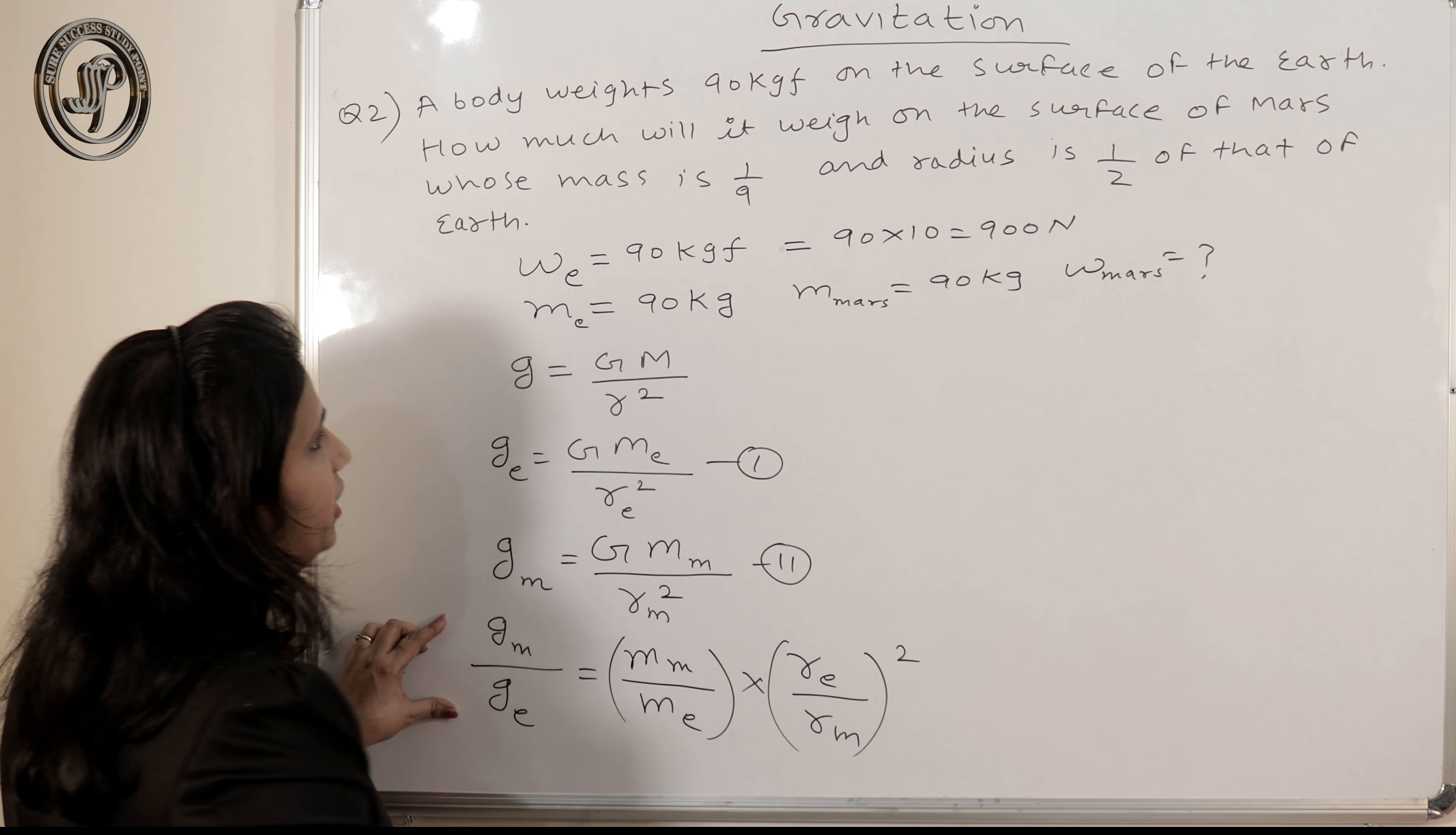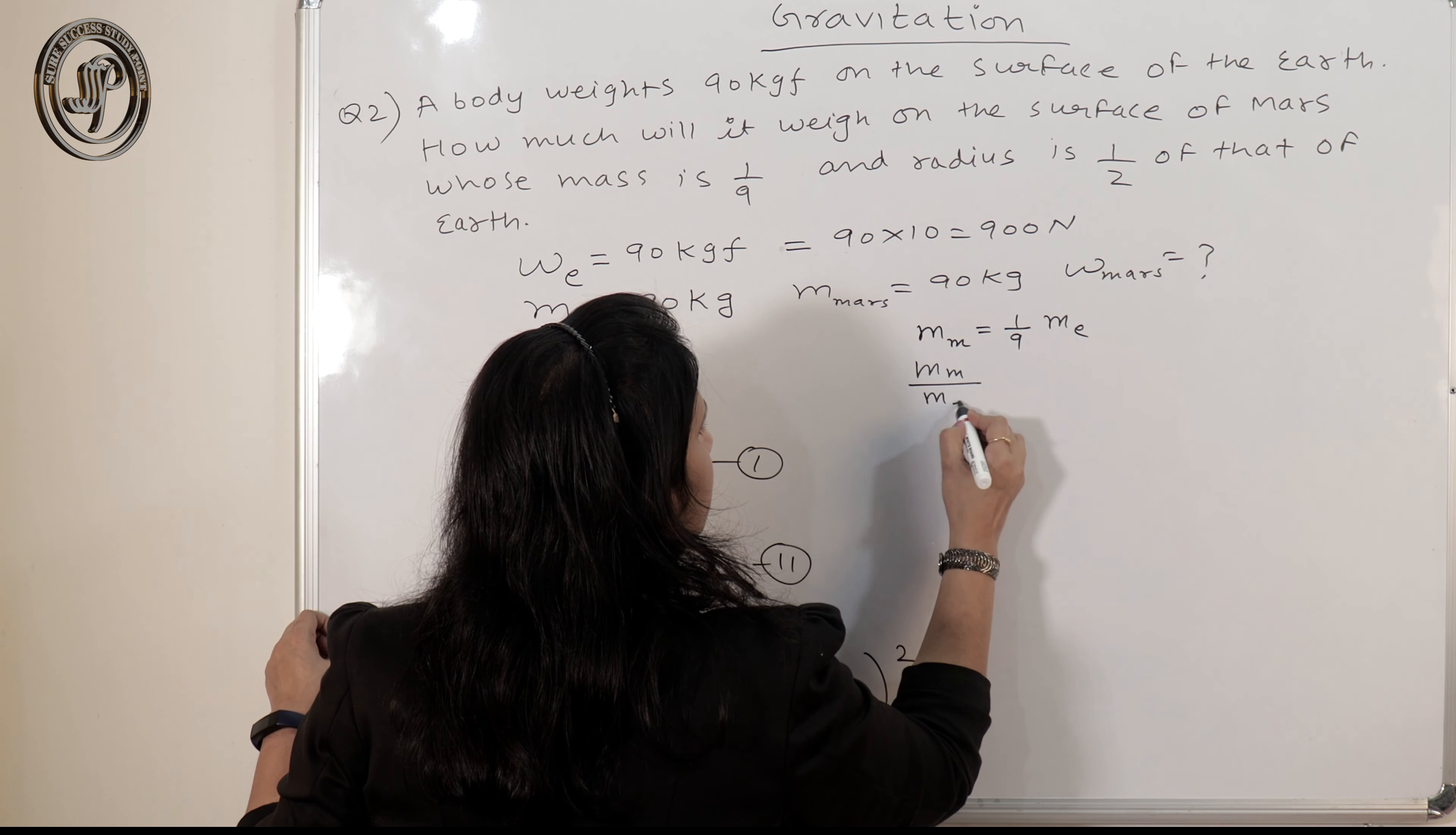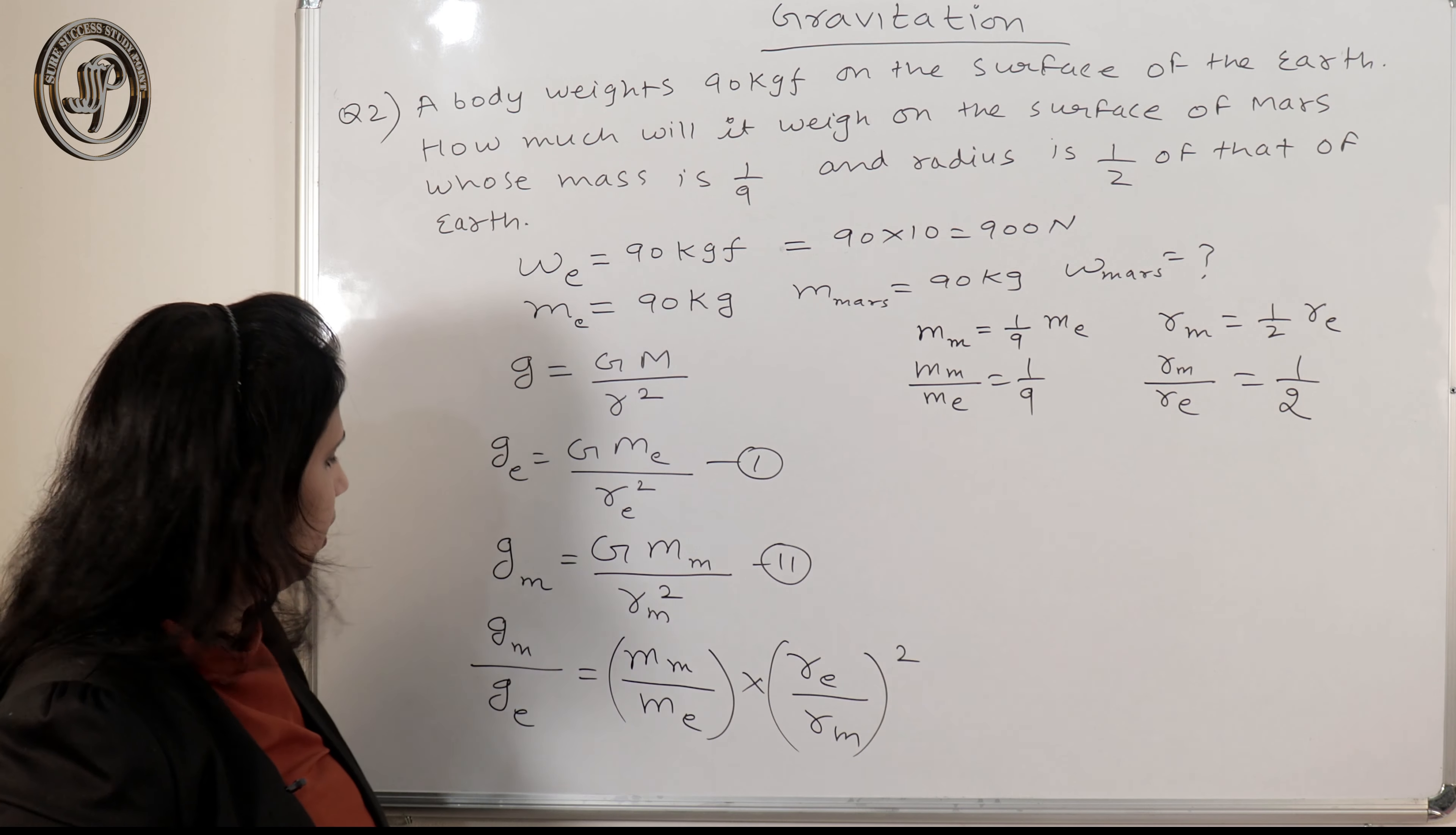Okay, now these ratios actually are given in question. That is, the mass is 1 by 9th of earth, means the given thing is what, the mass of Mars is 1 9th the mass of earth. So we will get the ratio of these two, right? And the radius of Mars is 1 half radius of earth, so r_m by r_e will be 1 by 2. Fine? The two ratios are given.